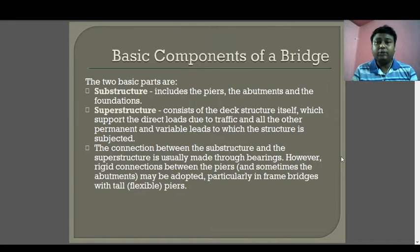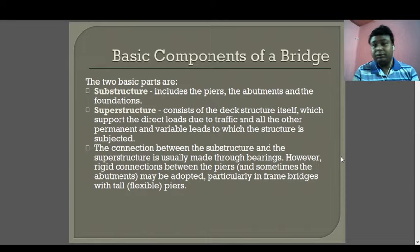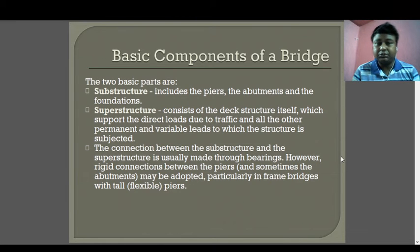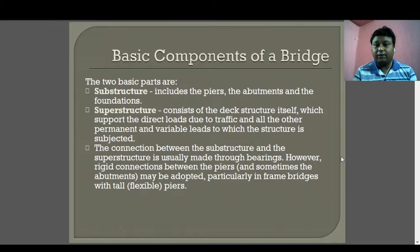The basic components of a bridge are the substructure and the superstructure. The substructure includes the piers, abutments, and foundation. The superstructure consists of the deck structure itself, which supports the direct load due to traffic and all other permanent and variable loads. The connection between superstructure and substructure is usually made through bearings. Details about piers, aisles, and pier caps will be shown with diagrams in later stages.